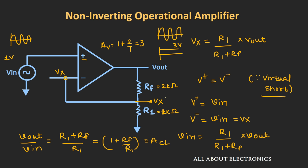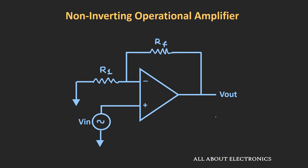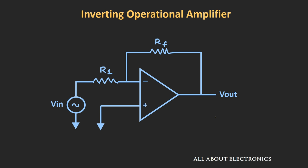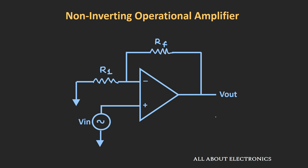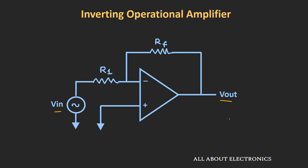This is all about the non-inverting op-amp configuration. Now the question is: what is the advantage of this non-inverting op-amp configuration over the inverting op-amp configuration? Because in both configurations we can control the gain using feedback resistance Rf and R1. One of the obvious advantages of the non-inverting configuration is that the output and input are in phase, while in the inverting configuration there is a 180-degree phase shift between output and input.